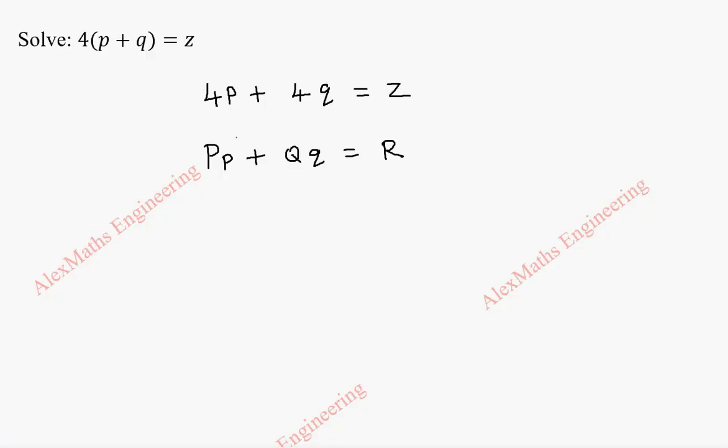By comparison, for capital P we have 4, for capital Q we have 4, and for capital R we have z. That is P equals 4, Q equals 4, and R equals z.